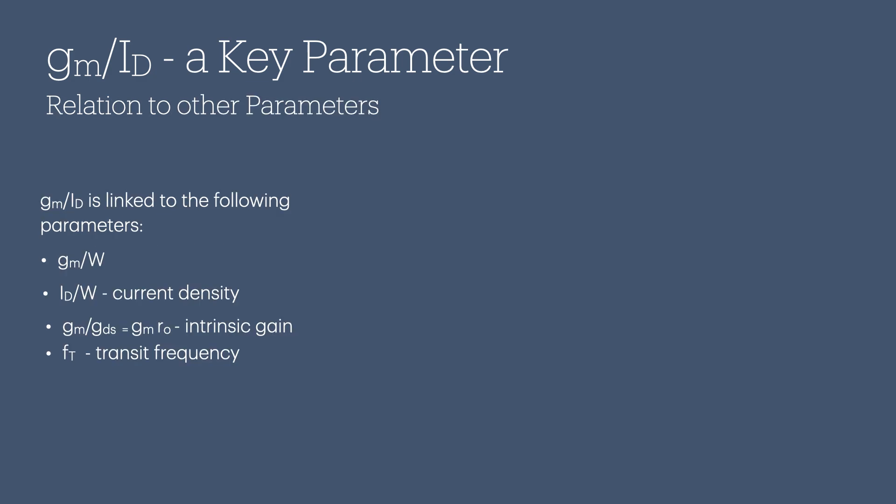Another key aspect of GM over ID is how it connects to other important analog design metrics. There's GM over W, which is transconductance per unit width; ID over W, or the current density; and GM over GDS (or GMR0), representing the transistor's intrinsic gain, with R0 as the output impedance. You also have FT, the transit frequency, indicating the highest frequency at which the transistor can still function as an amplifier. Viewing things through the GM over ID perspective lets you clearly see the main trade-offs. You can consider bandwidth, noise, distortion, and power dissipation all at once, and since everything is normalized, it makes comparisons much easier.